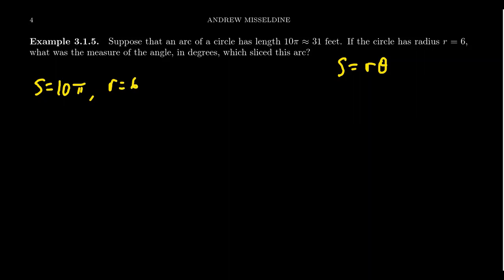These are all measured in feet. Theta is the one thing we don't know. Taking our arc length formula, we can divide by R and get that theta equals S over R. That is, 10 pi over 6, which simplifies to 5 pi over 3. This is the measurement of the angle in radians.